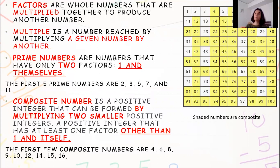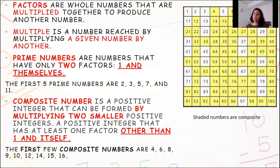Now what are prime numbers? Prime numbers are those numbers that have only two factors, that is 1 and themselves. For example, we take the number 5. What numbers when multiplied give you 5? Only 1 into 5 gives you 5. There are no other numbers whose product is 5. So 5 has become a prime number because only 1 into 5 gives you 5, meaning 5 has only two factors: 1 and 5 itself.